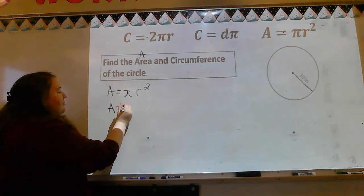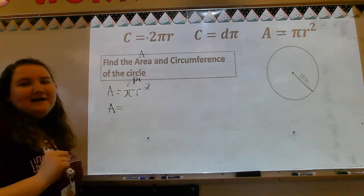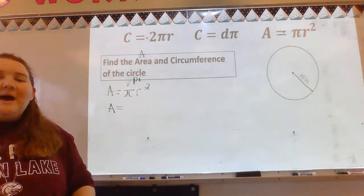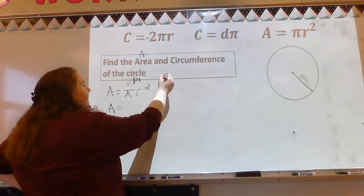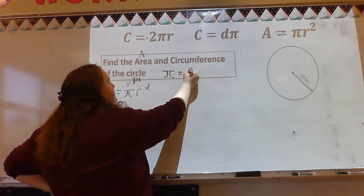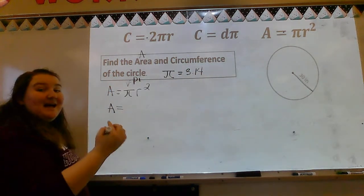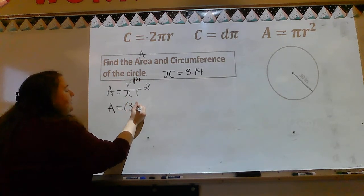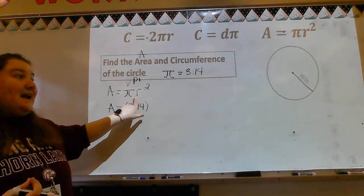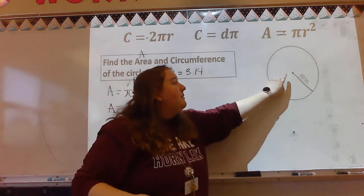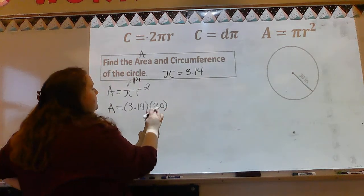A is what we're looking for. Pi — this little symbol is pi, P-I — not like pie you eat. Pi is just a placeholder for the number 3.14, so any time you see pi, you're going to use 3.14. So we're going to plug in what we know: for pi I'm plugging in 3.14, and then r is my radius. Looking at the circle, anything from the middle to the outside is your radius, so we have a radius of 30, and we're going to do 30 squared.